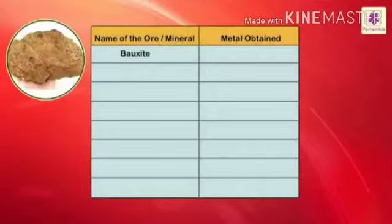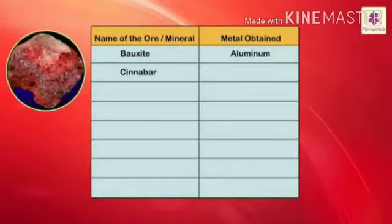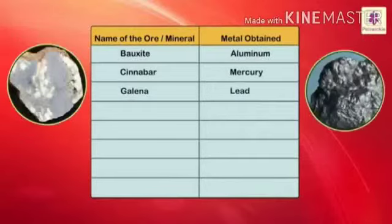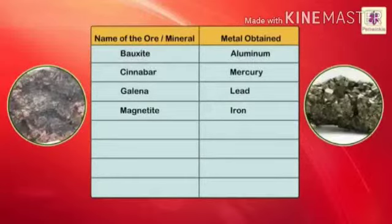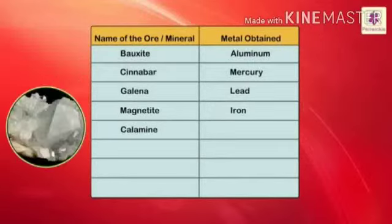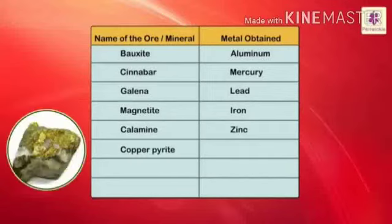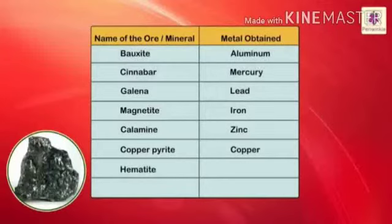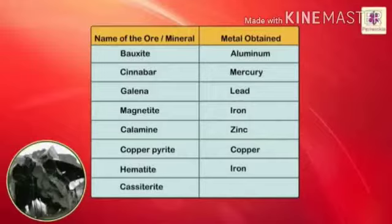Name of the ore or mineral and metal obtained: Bauxite gives aluminium; Cinnabar gives mercury; Galena gives lead; Magnetite gives iron; Calamine gives zinc; Copper Pyrite gives copper; Hematite gives iron; Cassiterite gives tin.